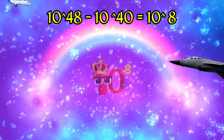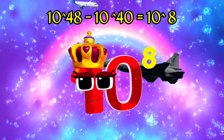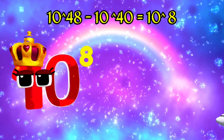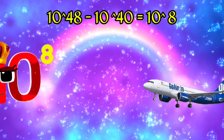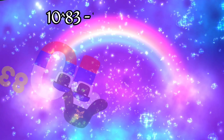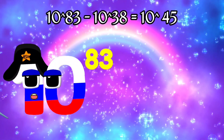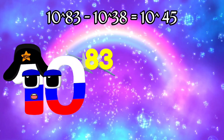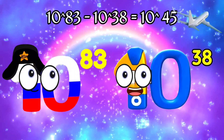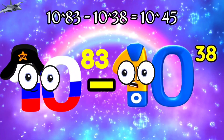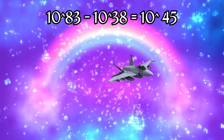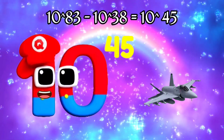Equals. I'm 100 Million, and I've got eight zeros. I'm Octavigintillion, and I've got 83 zeros. 100 Undecillion. Minus. Equals. Undecillion, with 36 zeros.